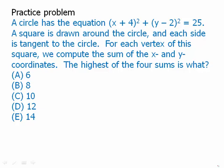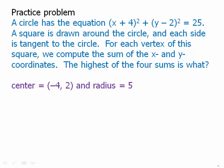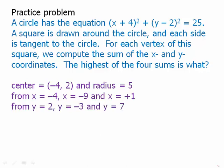From the equation, we know the center is (-4, 2) — very important, because it's x plus 4, meaning the x coordinate of the center is negative 4, and y minus 2 means the center is at positive 2. The radius is 5. From x = -4, going left five spaces gives x = -9, and going right five spaces gives x = 1. From y = 2, going down five spaces gives y = -3, and going up five spaces gives y = 7. Those two horizontal lines and two vertical lines define the square.